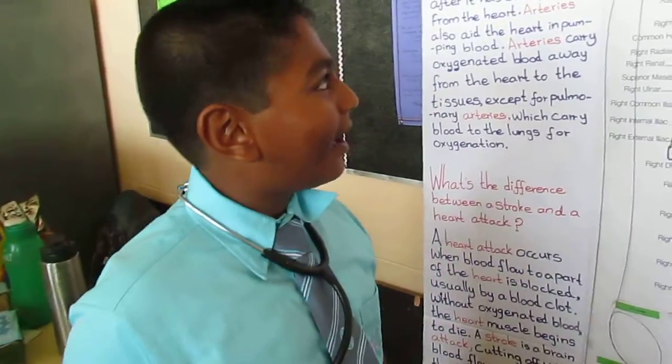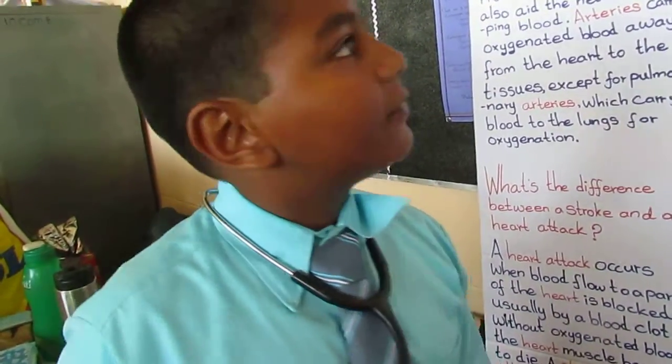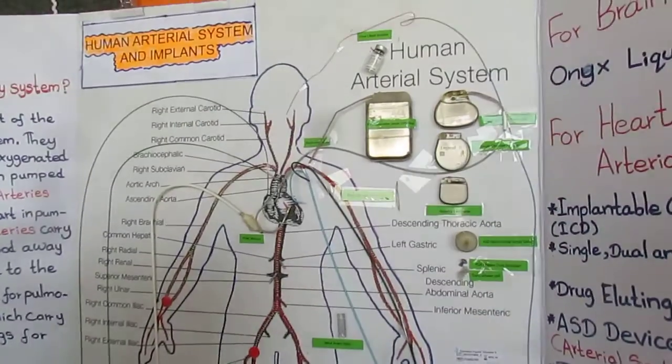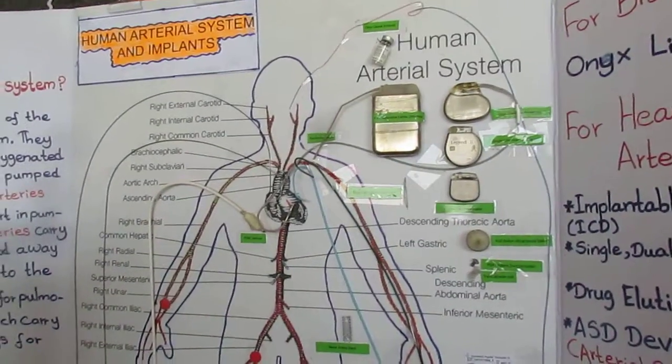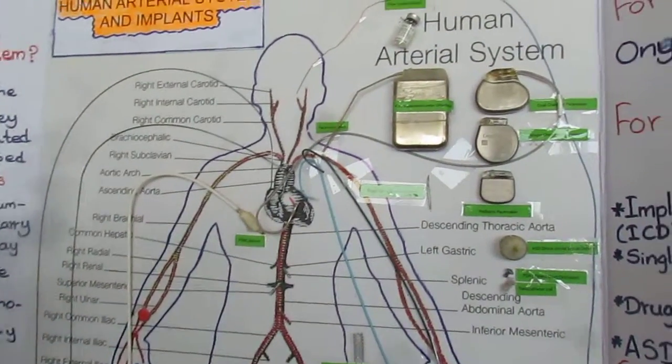I am talking about human arterial systems and implants. I will first start from the ONNICs. ONNICs ingredient coilings are for brain aneurysms.